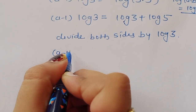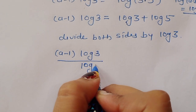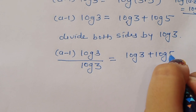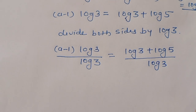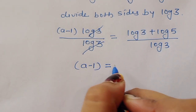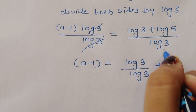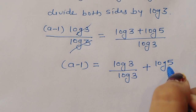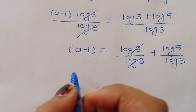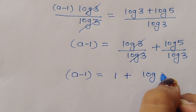We get: (a minus 1) times log 3 divided by log 3 equals (log 3 plus log 5) divided by log 3. The log 3 on the left cancels, and log 3 divided by log 3 on the right also cancels, giving us a minus 1 equals 1 plus log 5 divided by log 3.